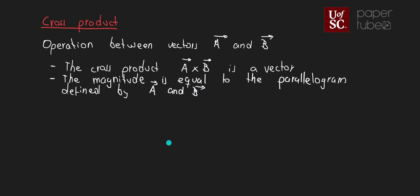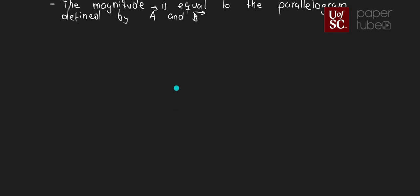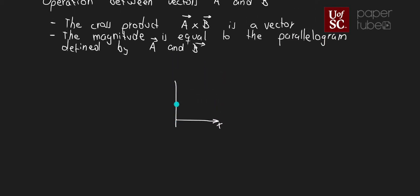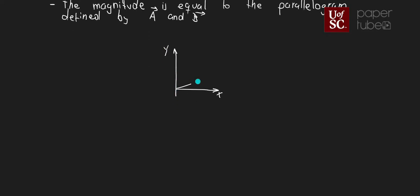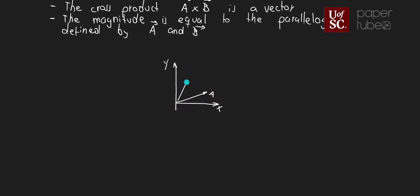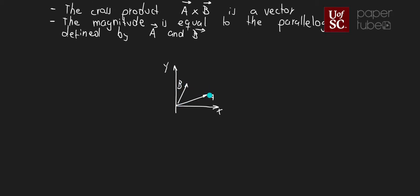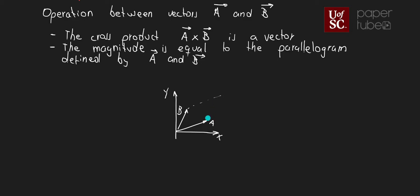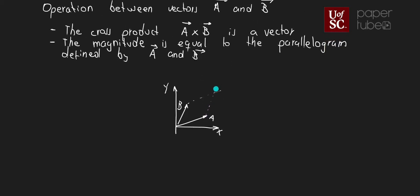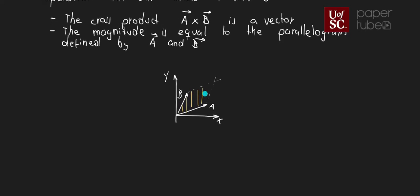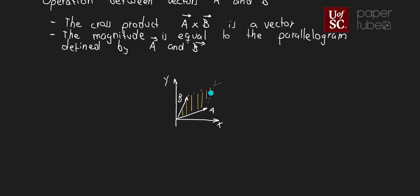Let me explain that in a second. Let's say that in two axes, we have our X axis, our Y axis, and we have vector A in here, vector B here. We can have this parallelogram defined by those two vectors, and the area in here is the magnitude of that cross product. That's another characteristic.